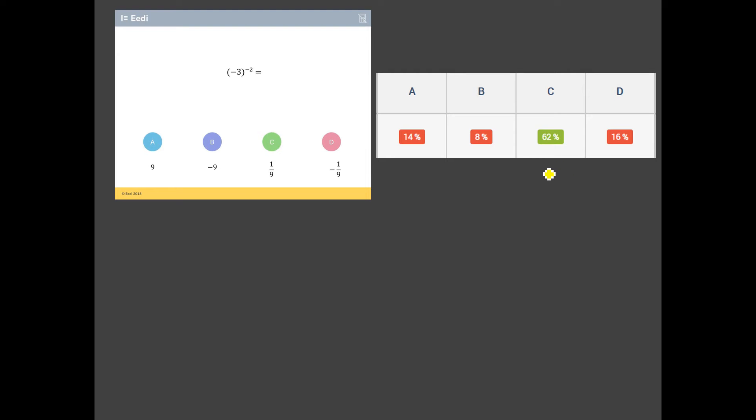Does the quiz agree with me? Yeah, it does. But look at that, only 62% of students also agreed with us. Most popular choice of wrong answer is D, negative a ninth. Now that's not a bad answer. I mean, it's not right. It's not great. But they've got the idea of this one over, this reciprocal bit.